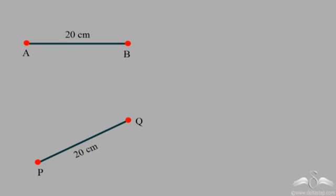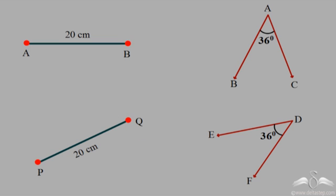We had also seen that two line segments are congruent as long as the length remains the same. Here AB is of length 20 and PQ is also of length 20, so I can say that AB is congruent to PQ. We also know that two angles are congruent when the measure is the same. So 36 degrees and 36 degrees — both are 36 degrees — so angle BAC is congruent to angle EDF.